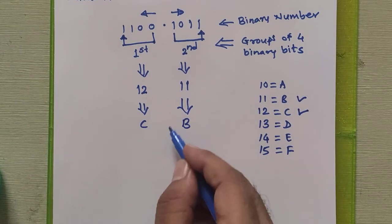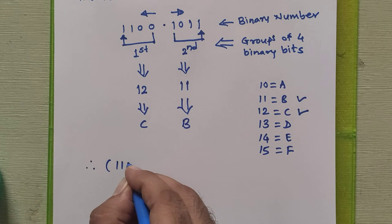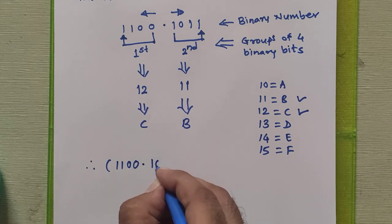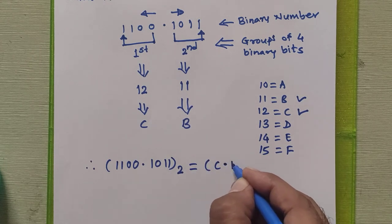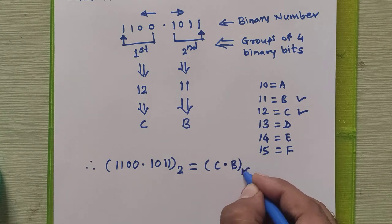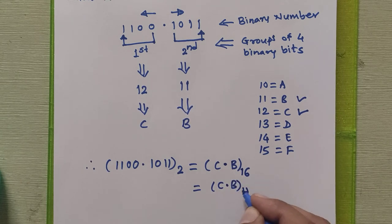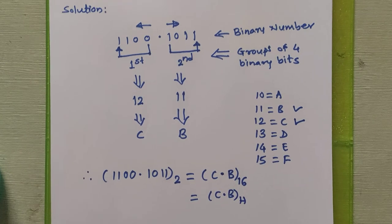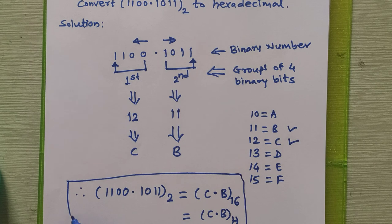Therefore we can say that 1100.1011 in binary is equal to C.B in hexadecimal (base 16), also written as CB with a capital H to represent hexadecimal. This is the process we follow to convert any given binary number to a hexadecimal number.